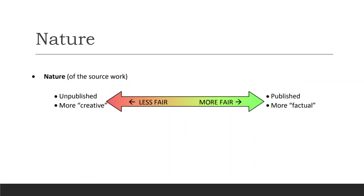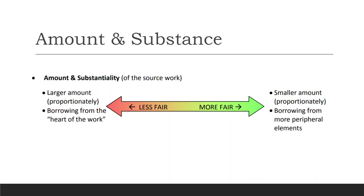The nature of the use is one we get confused on sometimes. If the work is unpublished or more creative, it's actually less fair to use it. If something's been published or it's more factual, it is more fair. Just remember: just because someone hasn't published something doesn't mean you can use it — it's actually less fair to use it if they haven't published it or officially put it out in the world. Next is the amount and substance: using just a couple pages from a book versus most of the book — it's more fair to use just a little bit. Also consider the heart of the work: am I using the most important parts, or just the peripheral elements that people wouldn't understand the whole book from?